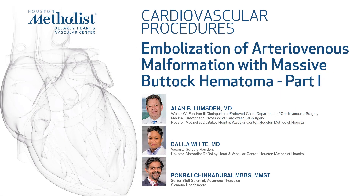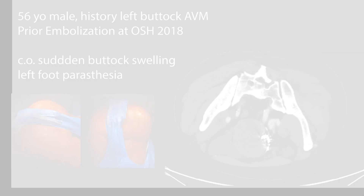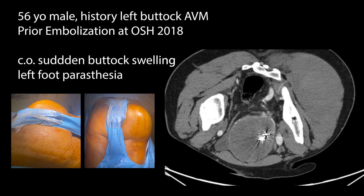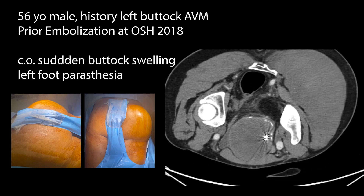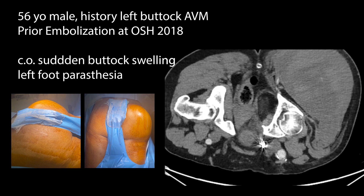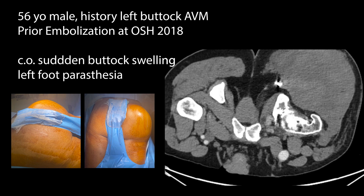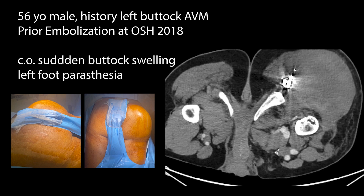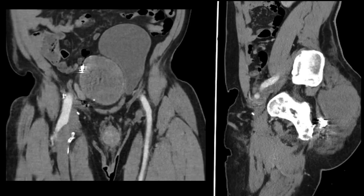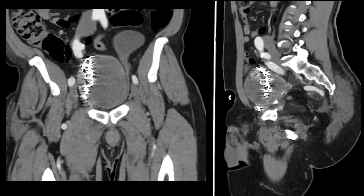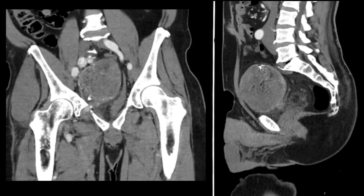This is a very interesting case of a 56-year-old male who presented with a vague history of a left buttock arterial venous malformation on CT scan. You can see a previously thrombosed aneurysm and a massive buttock hematoma, as well as the clinical picture of this huge hematoma in his left buttock.